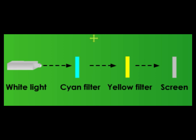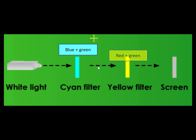What can you see on the screen? The cyan filter allows blue, green, and cyan light to pass through. The yellow filter allows red, green, and yellow light to pass through. Therefore, green color will pass through both filters and appear on the screen.